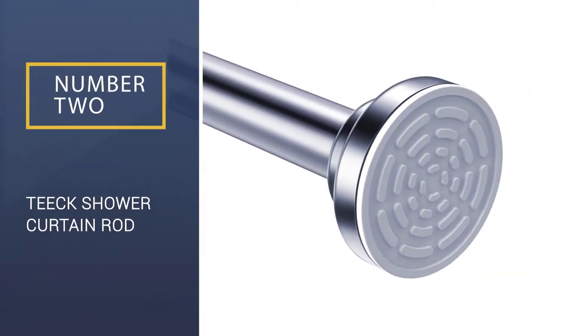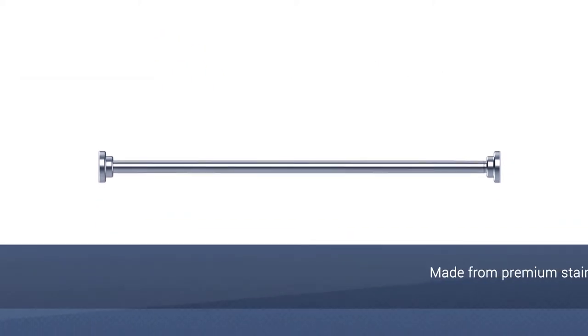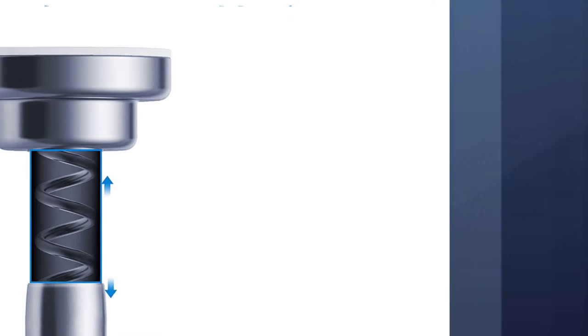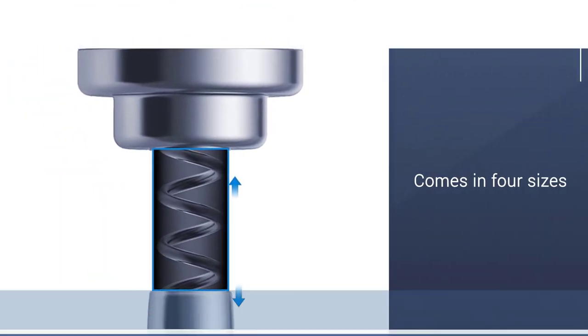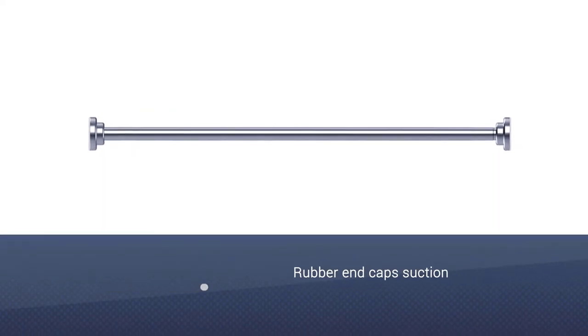Number 2. Teak Shower Curtain Rod. Made from premium stainless steel, the Teak Shower Curtain Rod won't rust. Because it's a tension rod, there's no drilling required. The rod comes in four sizes and adjusts to fit between opposing shower walls or tub shower combo walls.